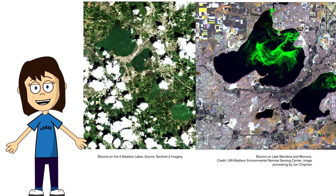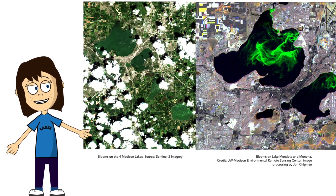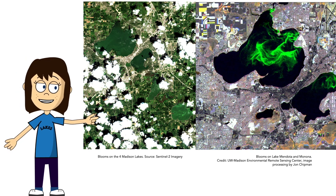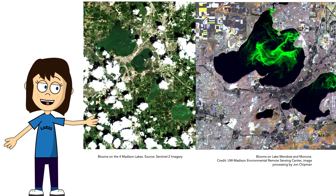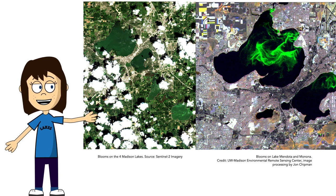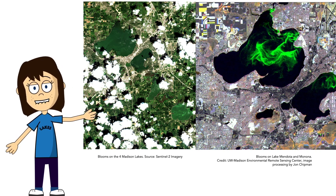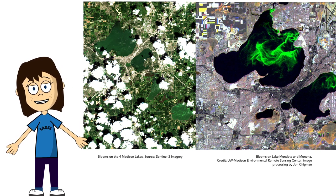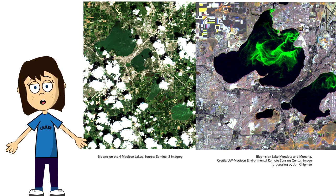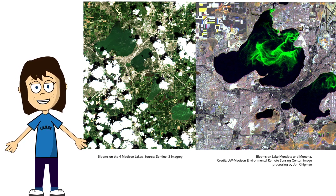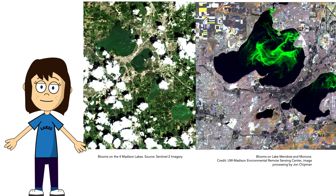Summers are now synonymous with green lakes. Here are satellite photos showing the color of the Madison lakes in the summer — these lakes are no longer blue the way they should be; they're full of phytoplankton. The phytoplankton populations are not being limited by those bottom-up controls: temperature, sunlight, and nutrients.